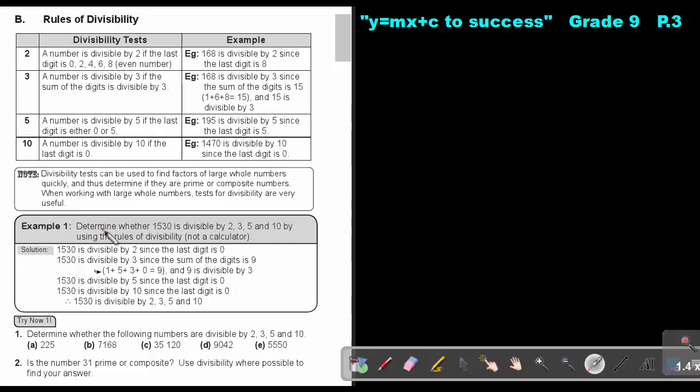Let's look at an example. Determine whether 1530 is divisible by 2, 3, 5, or 10 by using the rules of divisibility. Don't use your calculator. Can it divide by 2? Yes, because it's ending on 0. Can it divide by 3? Add up 1 plus 5 plus 3 plus 0, that's 9. And 9 is divisible by 3, so that whole number will be divisible by 3. Can it be divisible by 5? Yes, because it's ending on 0. Can it be divisible by 10? Yes, because the last digit is 0. So this number is divisible by 2, 3, 5 as well as by 10.